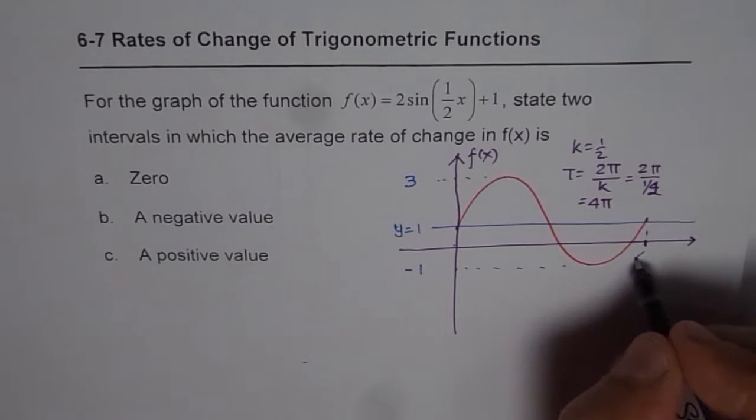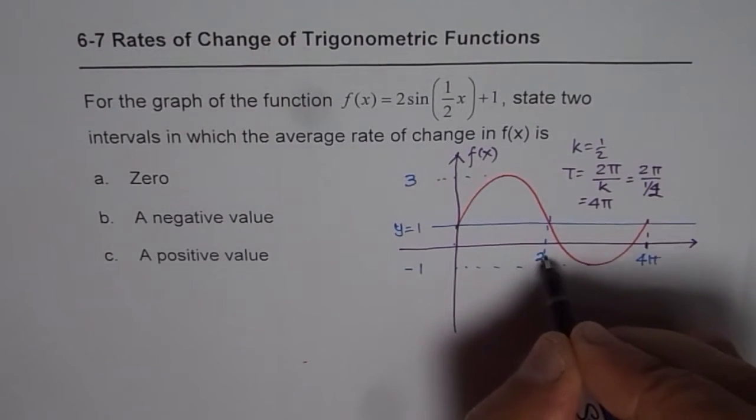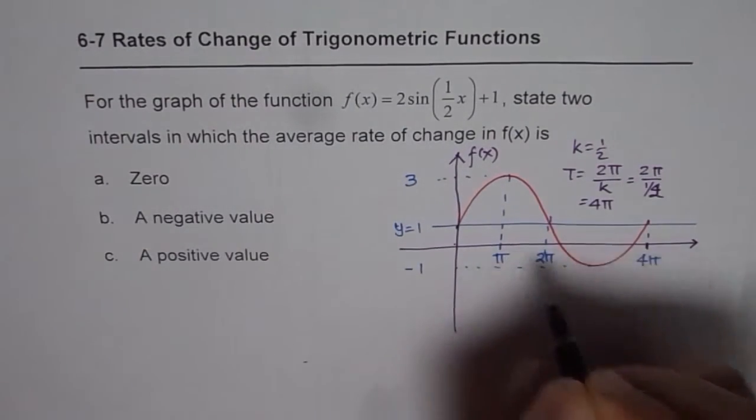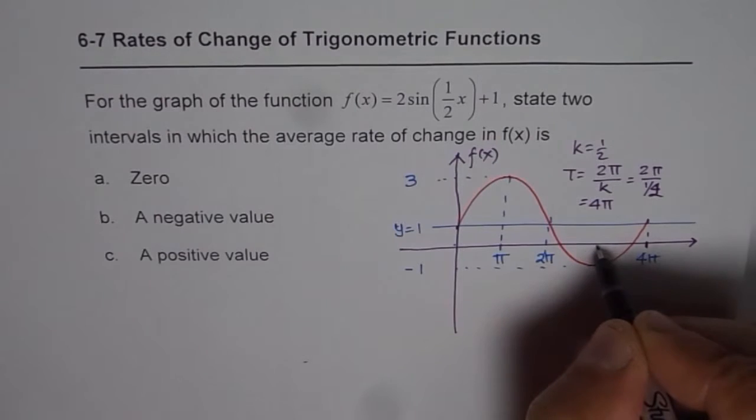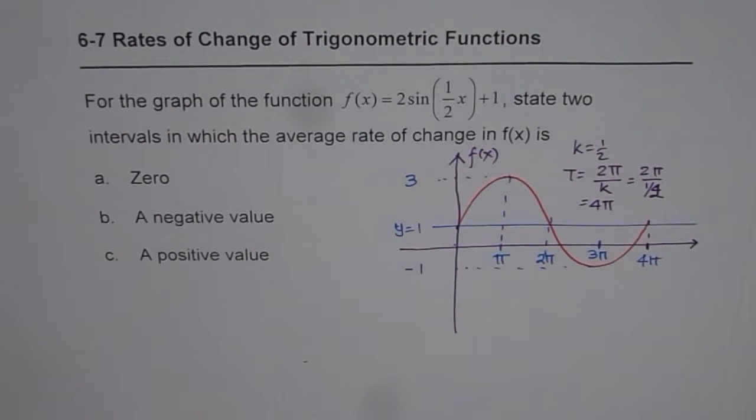So the center value should be at 2 pi. This will be half of 2 pi, which is pi. So 1 pi, 2 pi, this should be 3 pi. Perfect. So that is how our graph will look like for f of x equals 2 sine half x plus 1.